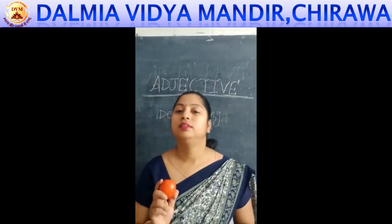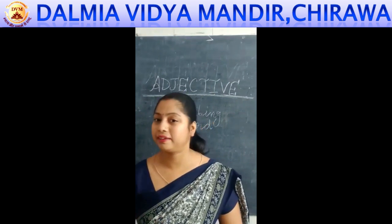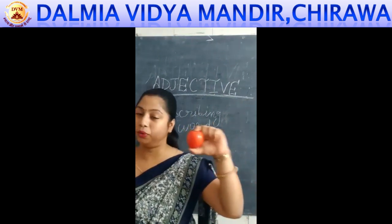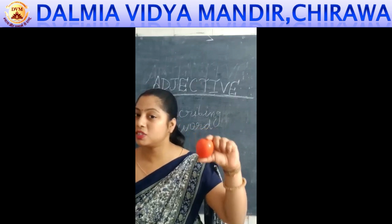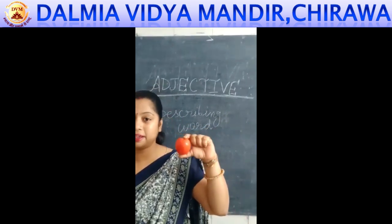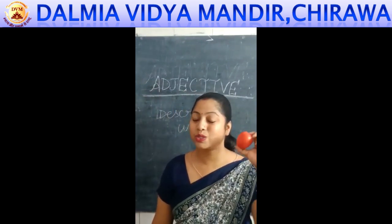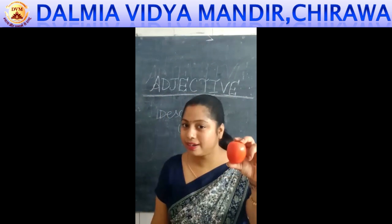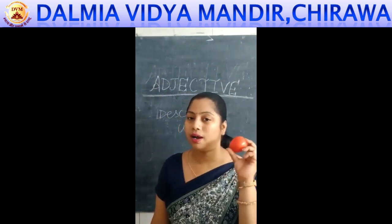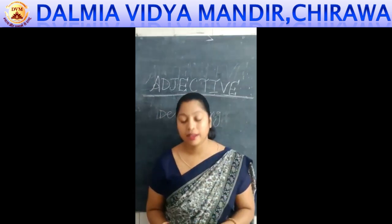Adjective held up a tomato and said, 'See, this is the tomato. But it is of red color, and it is sour in taste. So this red color and taste — these two are the qualities of this tomato.'